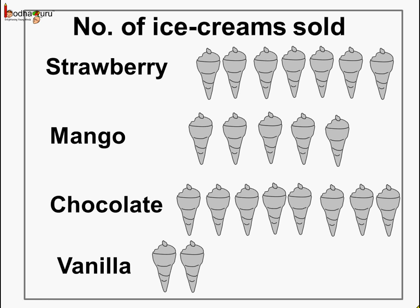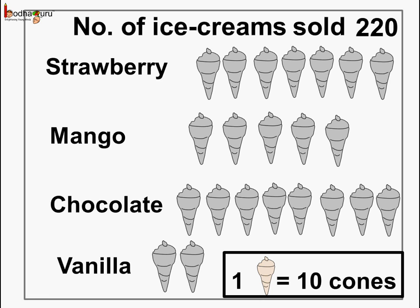Now let us see a pictograph of a particular day's sales of ice cream by the ice cream vendor. This day he sold 220 ice creams. Is it possible to show that by this pictograph? For this we need to check the note given under the pictograph. If we look carefully, it says one cone stands for 10 ice creams, which means each cone represents 10 ice creams instead of just one.